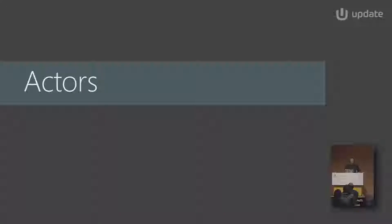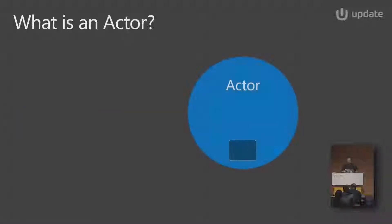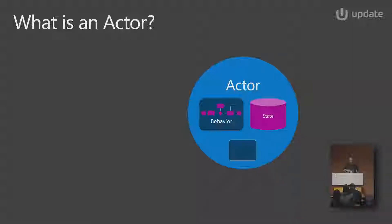Today is just the basics. So first of all, what is an actor? In almost every presentation I've seen about the actor model, there was a picture of David Hasselhoff or some kind of movie actor. To be original, I didn't do that. But what is an actor? First of all, it's just an object in memory. It will get more interesting, but bear with me. It is just an actor object that lives somewhere in memory. It has some state, and it has some behavior — basically nothing more than just an object in memory.